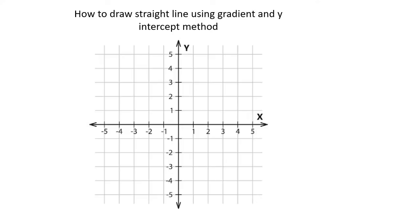So let's say we have a straight line equation, and that straight line equation is y equals to 2 over 3x minus 4.